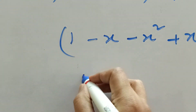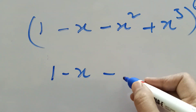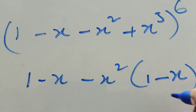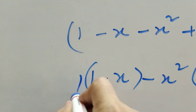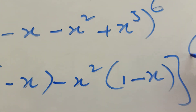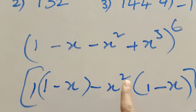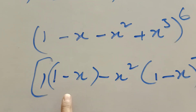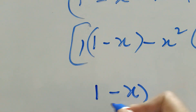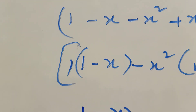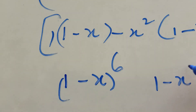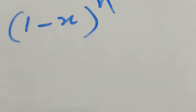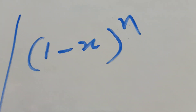I want to factor out (1 minus x). The highest factor involves x square. Then write here: (1 minus x) into (1 minus x square), whole power 6.